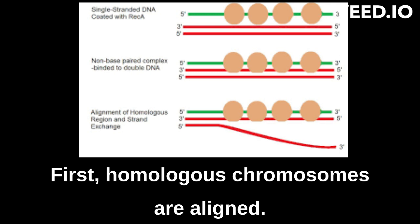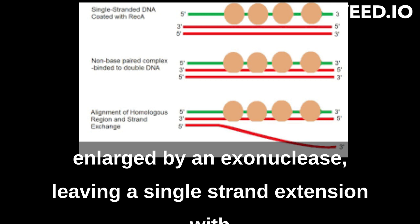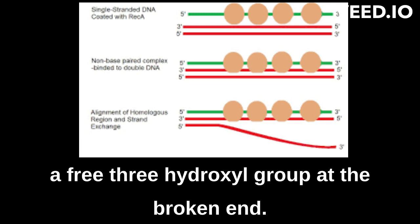First, homologous chromosomes are aligned. Second, a double-strand break in a DNA molecule is enlarged by an exonuclease, leaving a single-strand extension with a free 3-hydroxyl group at the broken end.